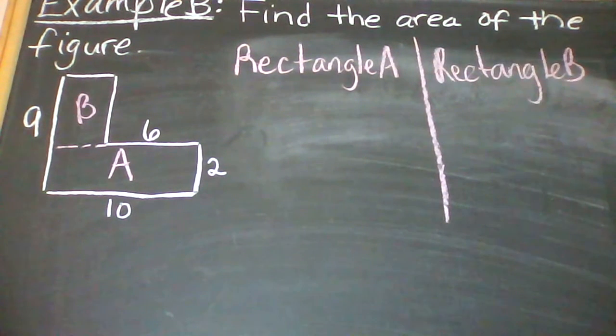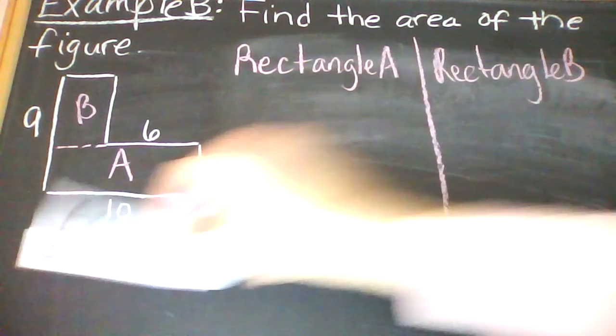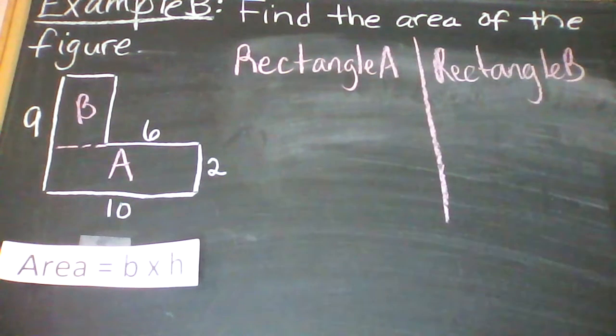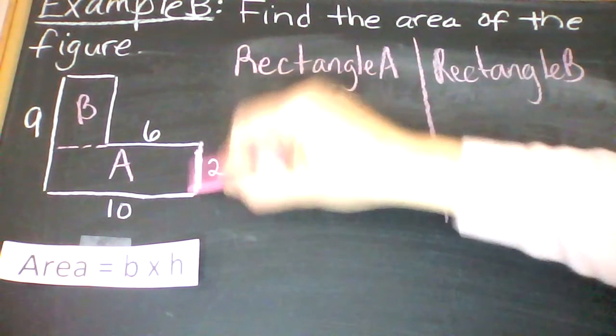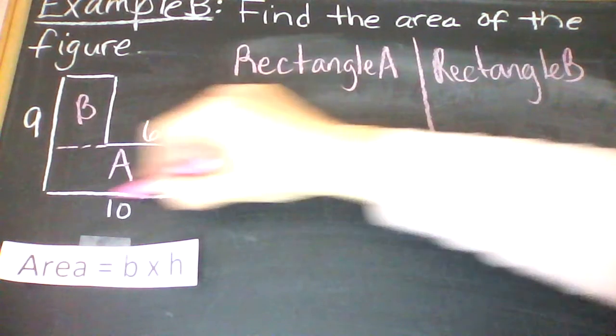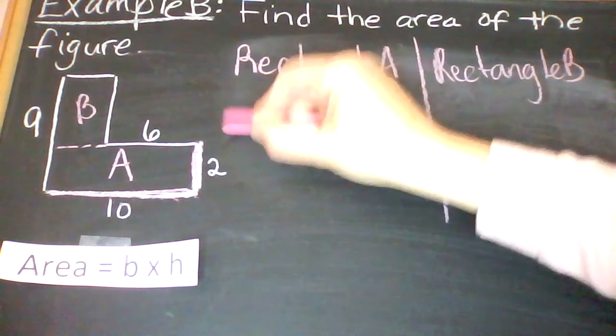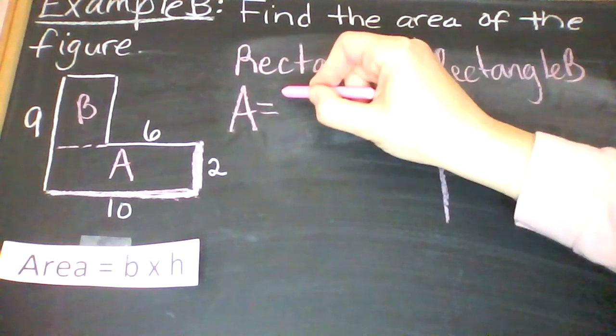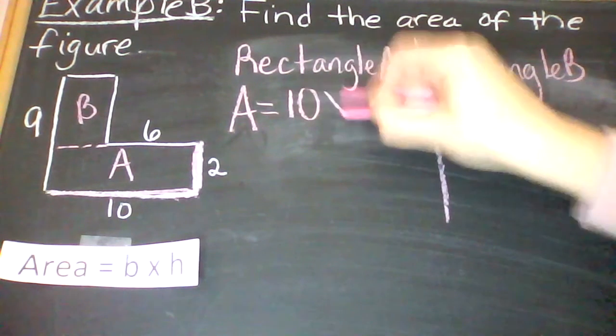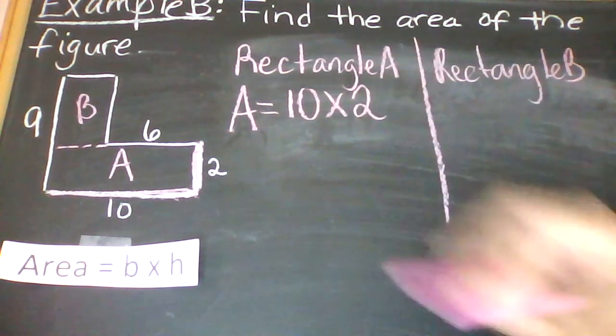So I need to multiply base times height to find the area of each of those rectangles. So for the first rectangle, rectangle A, the height is 2 and the base is 10. So I'm going to multiply 10 times 2. 10 times 2 gives me 20.